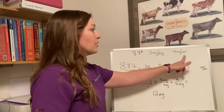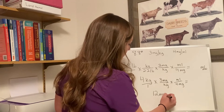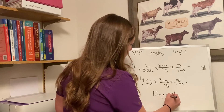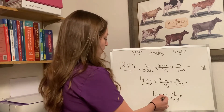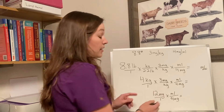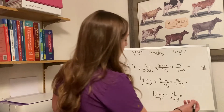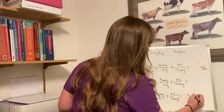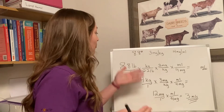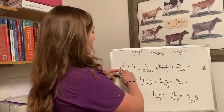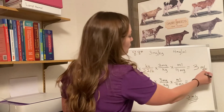But I still don't know how many milliliters that is, so we have one more step. Remembering that a whole number is over 1, and a number on the bottom means we divide — so 12 divided by 4. Now I know that for my 8.8-pound patient, after going through this equation, they need 3 milliliters of the drug.